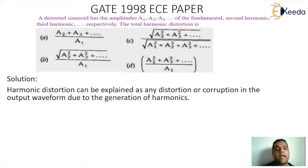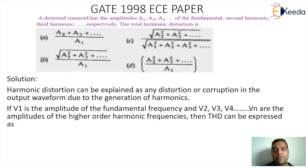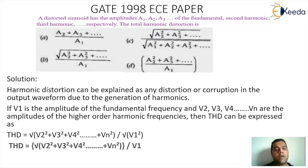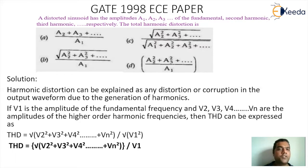We need to understand that harmonic distortion is a distortion or corruption in the output waveform due to the generation of harmonics. If V1 is the amplitude of the fundamental frequency and V2, V3, V4, Vn are the amplitudes of the higher-order harmonics, then total harmonic distortion is expressed as: square root of (V2² + V3² + V4² + ... + Vn²) divided by V1. In this question, the terminology V is replaced by parameter A. Matching the relation, the correct answer is option B.